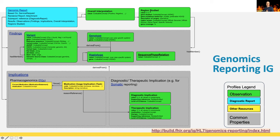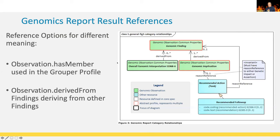The report includes overall interpretation, region studied, findings, and the genomic report has members like the variant, genotype, and haplotype, plus sequence phase relationships like cis/trans between different variants, genotypes, or haplotypes. Result references are important: has-member is used in the grouper profile, and derived-from relationships are used between observations for findings deriving from other findings — for example, the overall genomic interpretation is derived from zero to many variants or haplotypes.